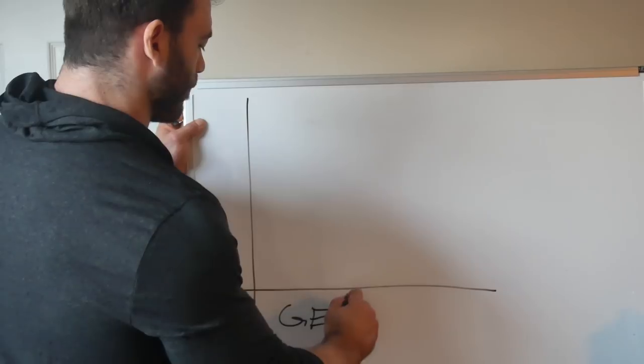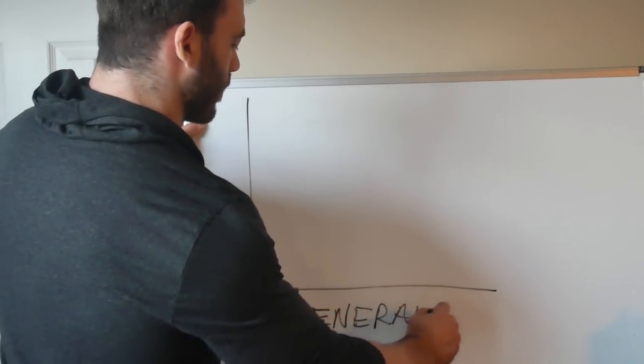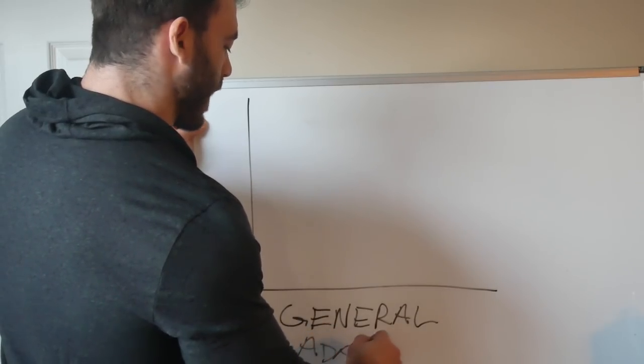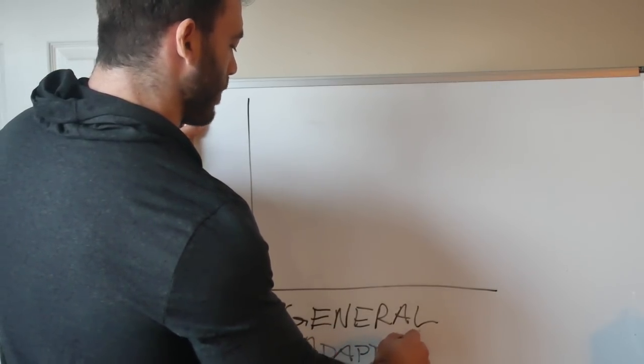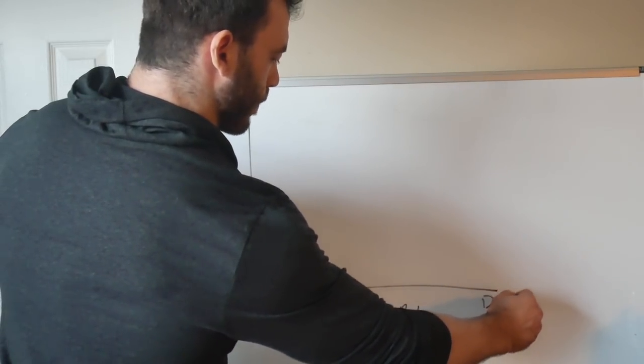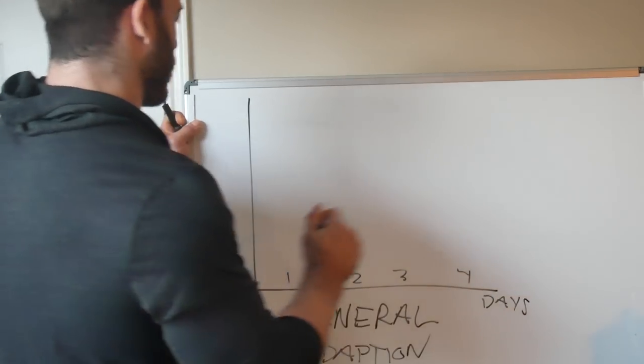So General Adaptation Syndrome is an idea that describes how the body responds to training. I've got this graph here, and on the x-axis going across, you have time. So let's say this is days, and you've got 1, 2, 3, 4, and so on.